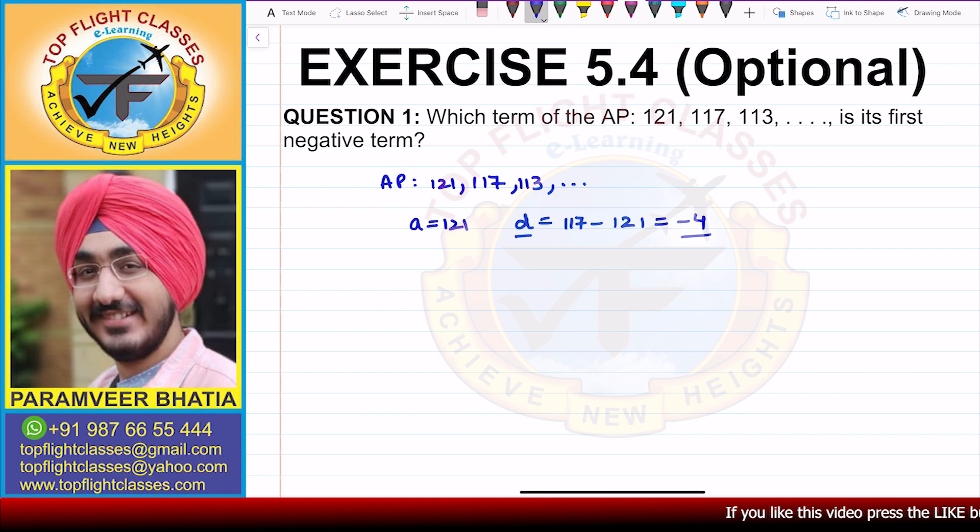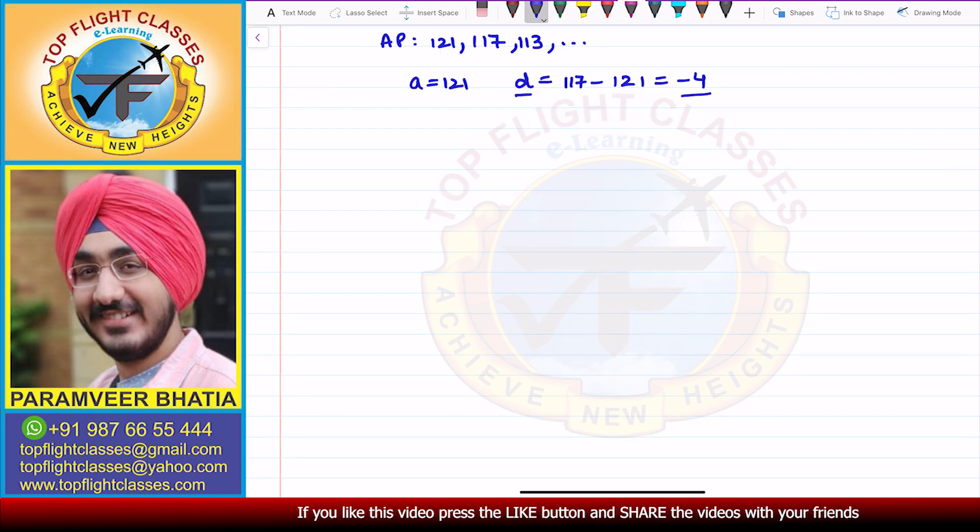Now since the common difference is negative, therefore this is a decreasing AP and sometime a negative term will come. Now let us say that AN represents the negative terms in this case. So negative terms are less than 0.